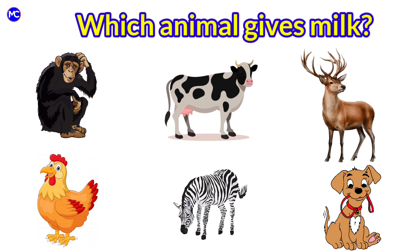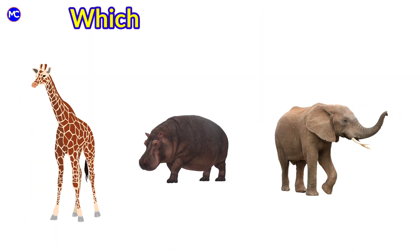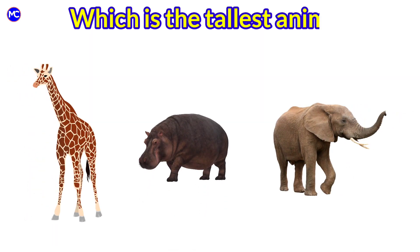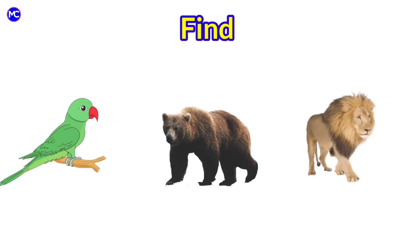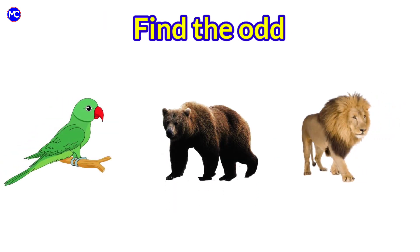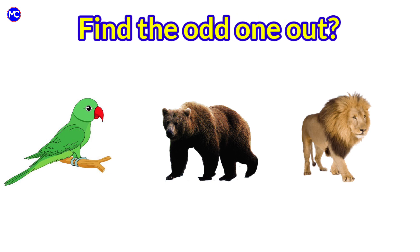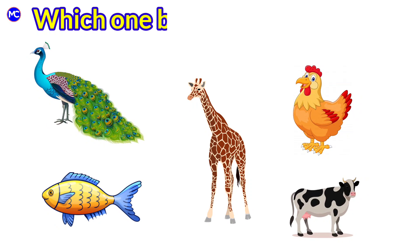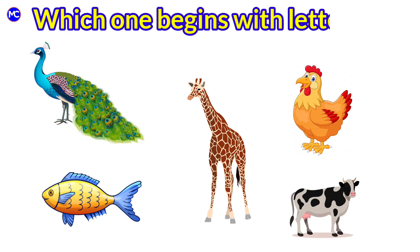Answer is cow. Which is the tallest animal? Answer is deer. Find the odd one out. Answer is parrot. Which one begins with the letter P? Answer is peacock.